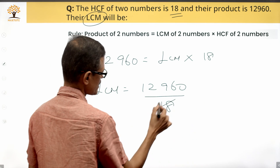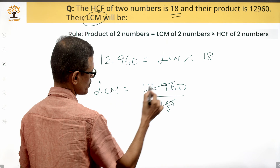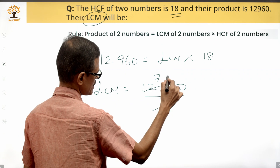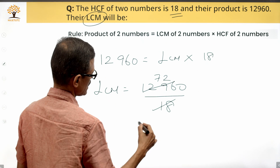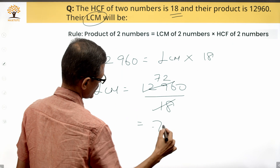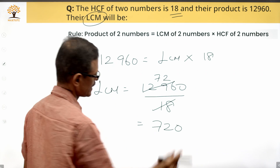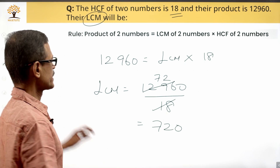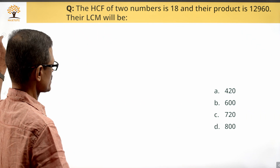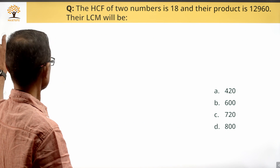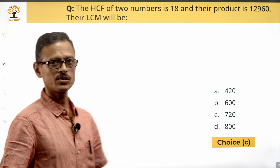We will cancel out this part to leave us with 72, so LCM is equal to 720. The LCM of these two numbers is 720, so C is the correct answer to the question.